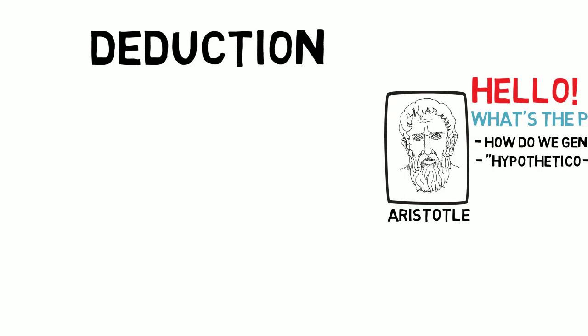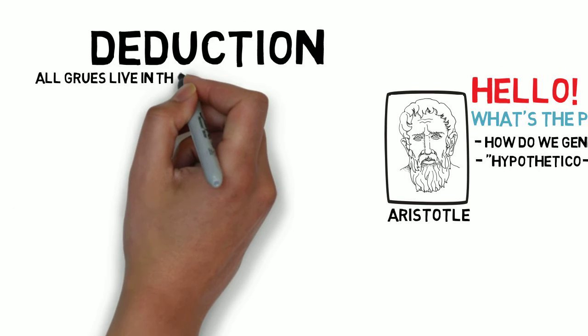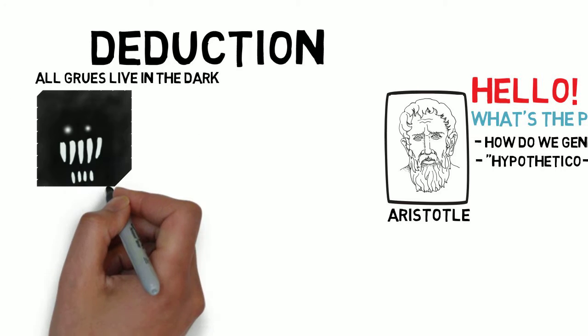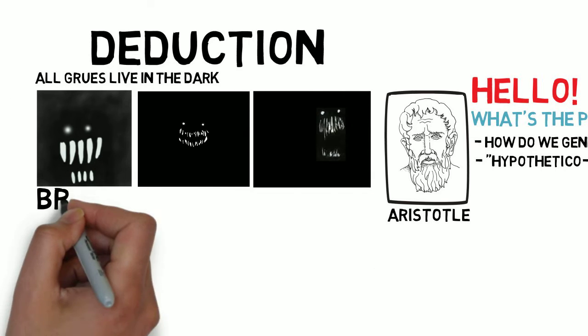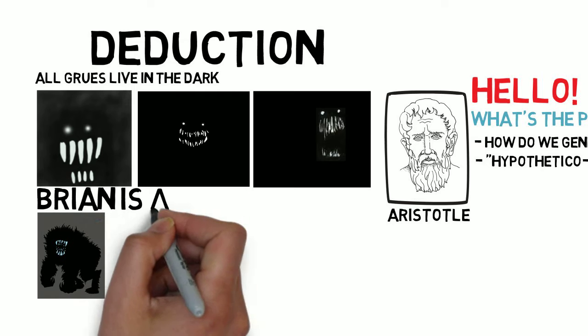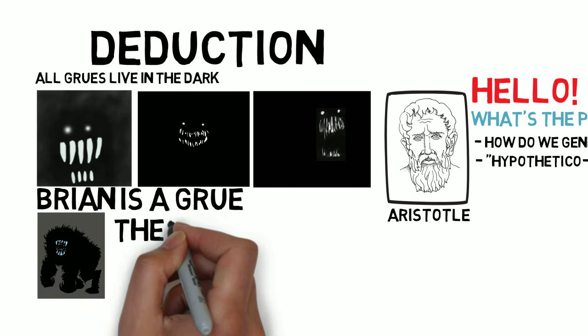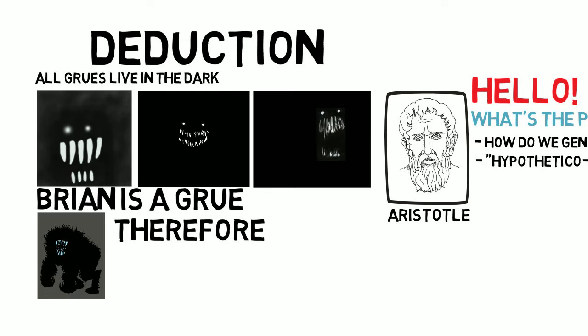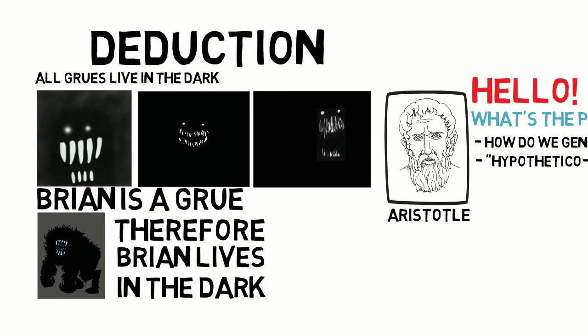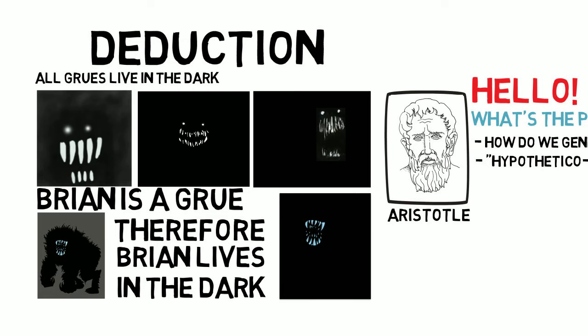Deduction is a process where you start with a general principle or law that's already known — such as "all grooves live in the dark" — then you make a particular observation: "Brian is a groove." From those two premises, it then follows with complete certainty that Brian lives in the dark. So you've generated a new piece of knowledge. The problem is that deduction isn't able to generate new general principles of knowledge, only new particulars.